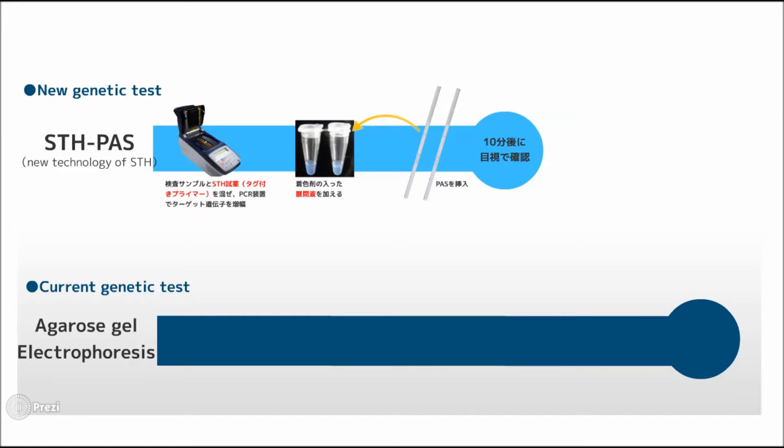Now let us compare this with the agarose gel electrophoresis method. We amplify a target gene in the PCR device the same way as for the STH method.